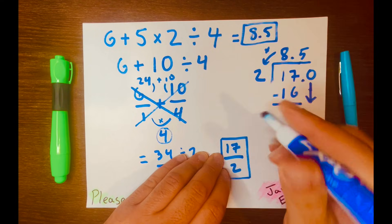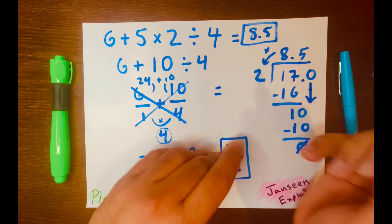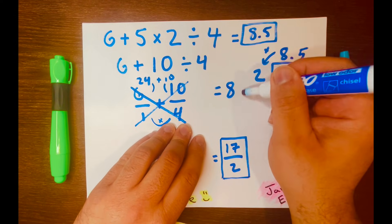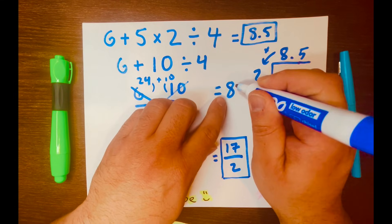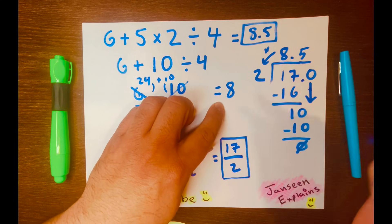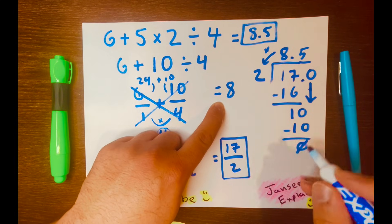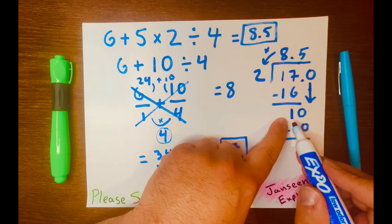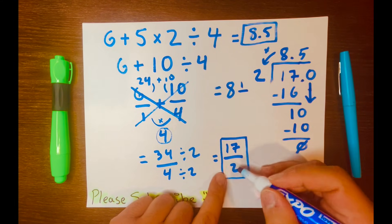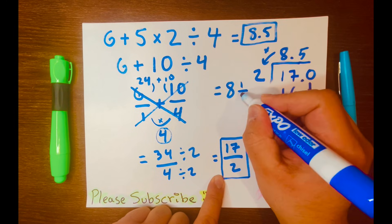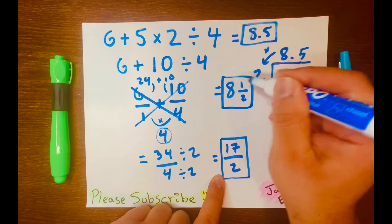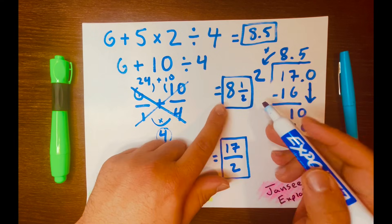And then our mixed number answer: it's 8, that's the whole number, and we need a proper fraction next to the 8, or the whole number. So you write the remainder at the top and your denominator from this over here. So it's 8 1 over 2, or 8.5.